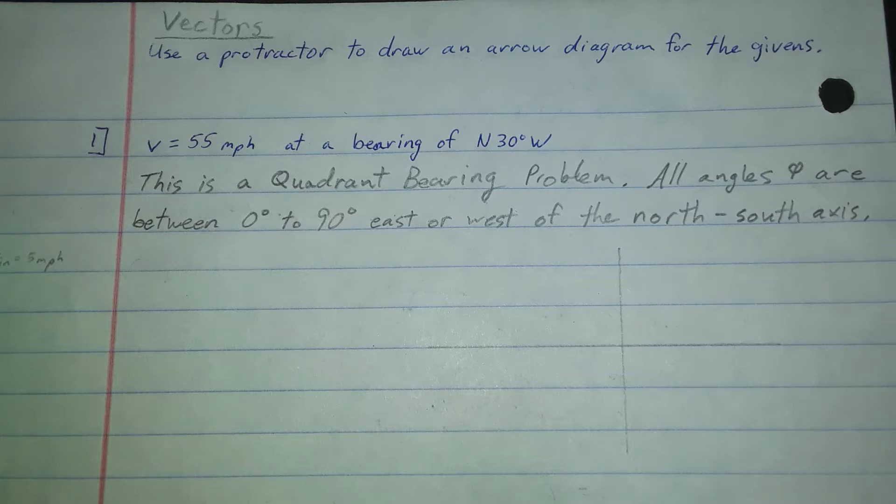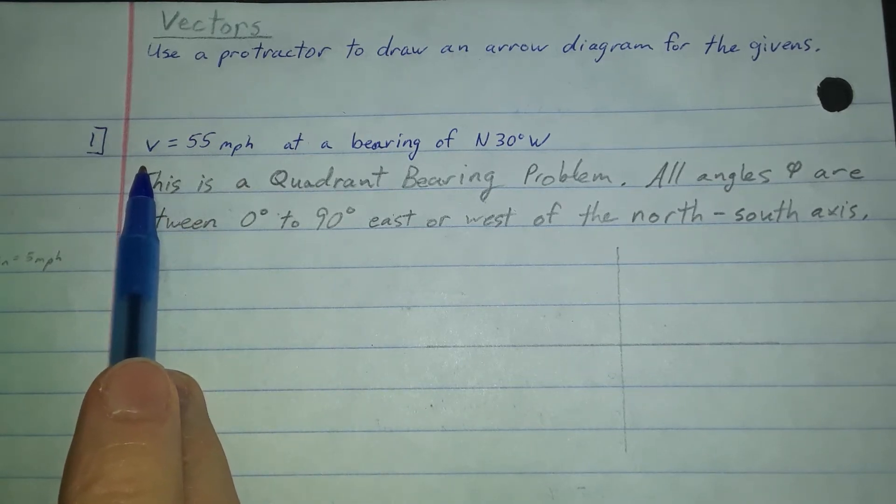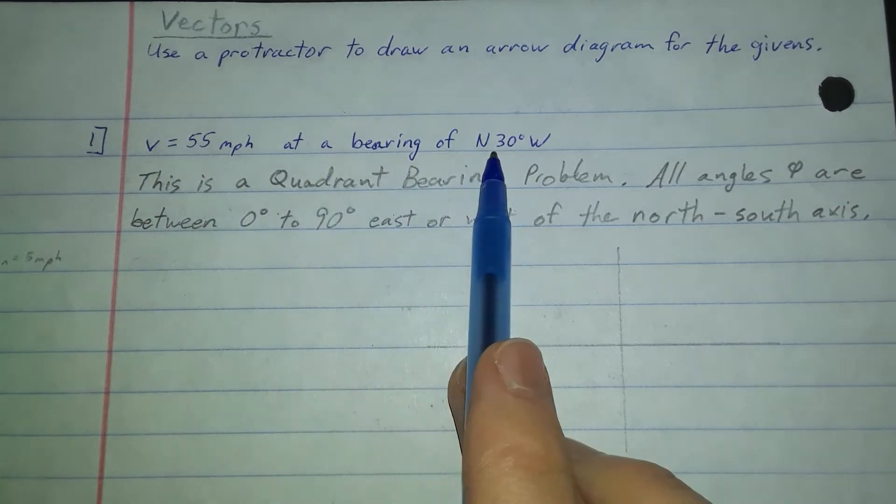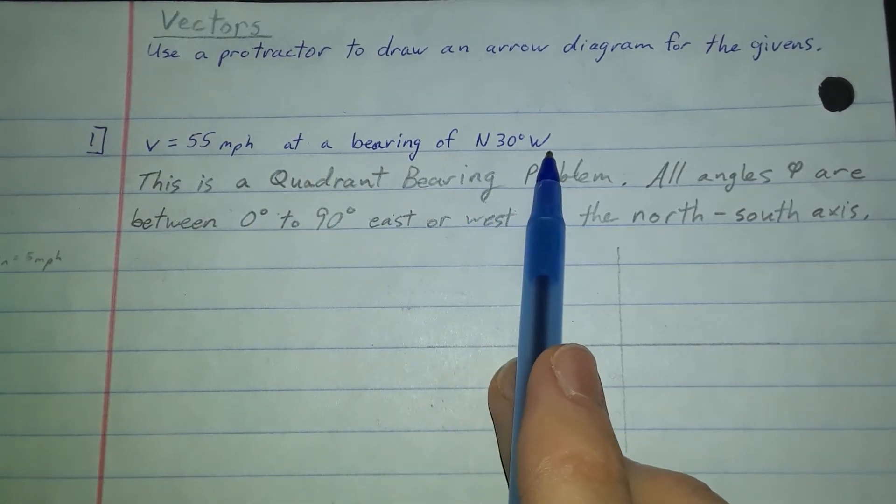The first vector that we're going to do is named v. They typically are named u and v when you get problems that you work on. They could be any variable really, but this one is going to be vector v. It's going to represent 55 miles per hour traveling at a bearing of north 30 degrees west.